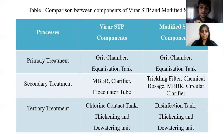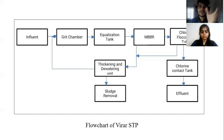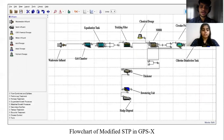The tertiary treatment was replaced with a disinfection tank in place of the chlorine contact tank, and the thickening and dewatering unit was kept the same. This is the flow chart of the Virar STP, which was the original existing STP. The flow of the treatment starts from the effluent and ends with sludge removal and effluent, with the secondary and tertiary treatment units coming in between. This is the flow chart of the modified STP, which was modeled in the GPSX software, showing the addition of the trickling filter, chemical dosage unit, and circular clarifier tank.